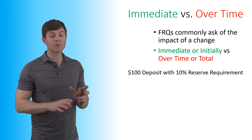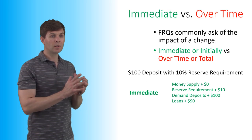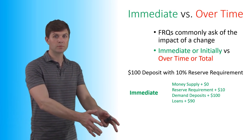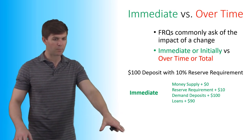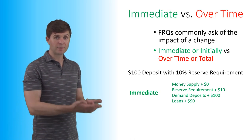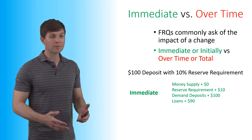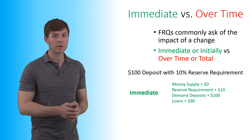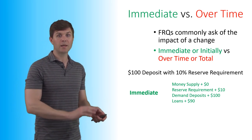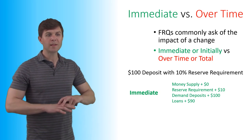For example, a $100 deposit with a 10% reserve requirement: an immediate change means the money supply changes by nothing — the depositor brings $100 cash and it goes into the bank's vault. Nothing changed in the money supply. Required reserves increase by $10 (10% of $100). Demand deposits go up by $100. And because $10 goes into reserve, there's $90 in excess reserves — so loans can initially increase by $90. That's the immediate change.